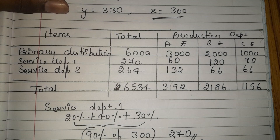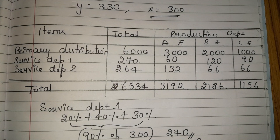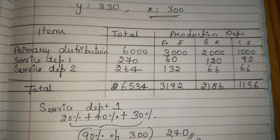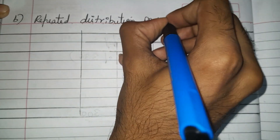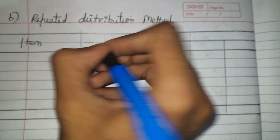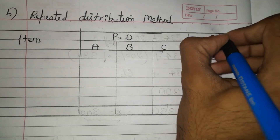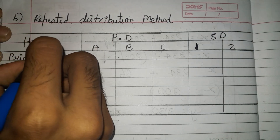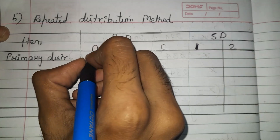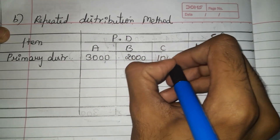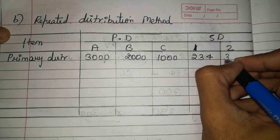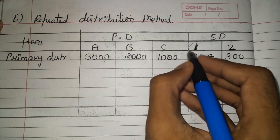Now we solve using the repeated distribution method, where we keep repeating cost distribution. The table includes A, B, C (production) and departments 1 and 2 (service). Primary distribution: A = 3000, B = 2000, C = 1000, service dept 1 = 234, service dept 2 = 300. First, we apportion service department 1.